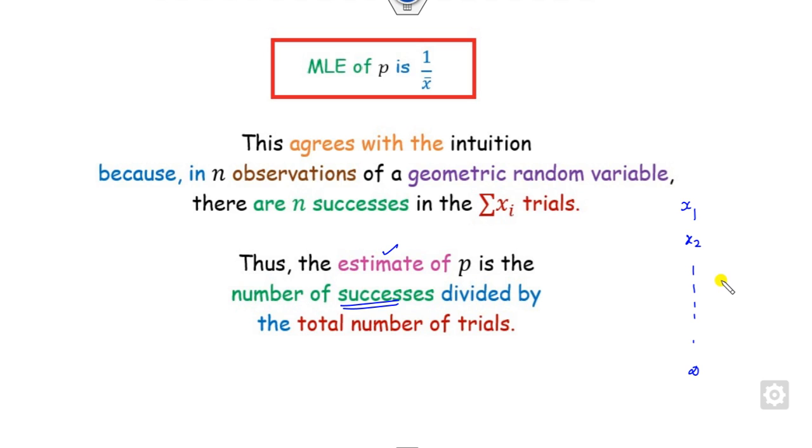If you perform the experiment infinite number of times, how many times does success occur? This is how you find the maximum likelihood estimator of parameter P in the geometric distribution.